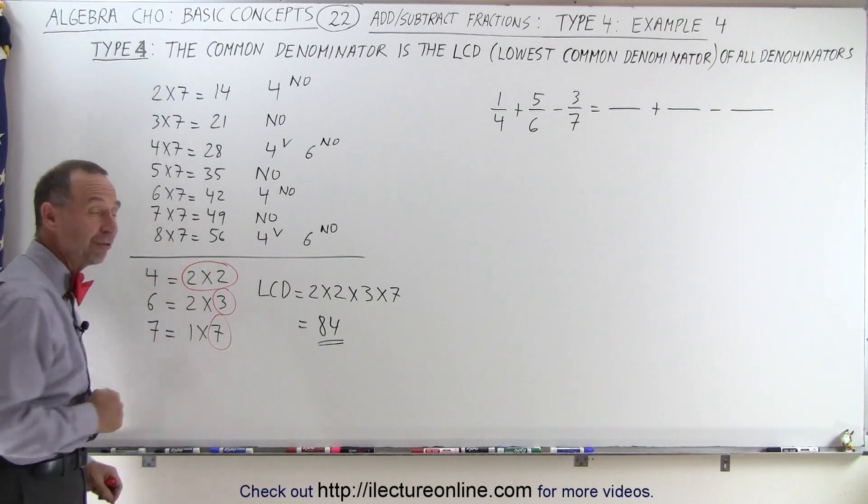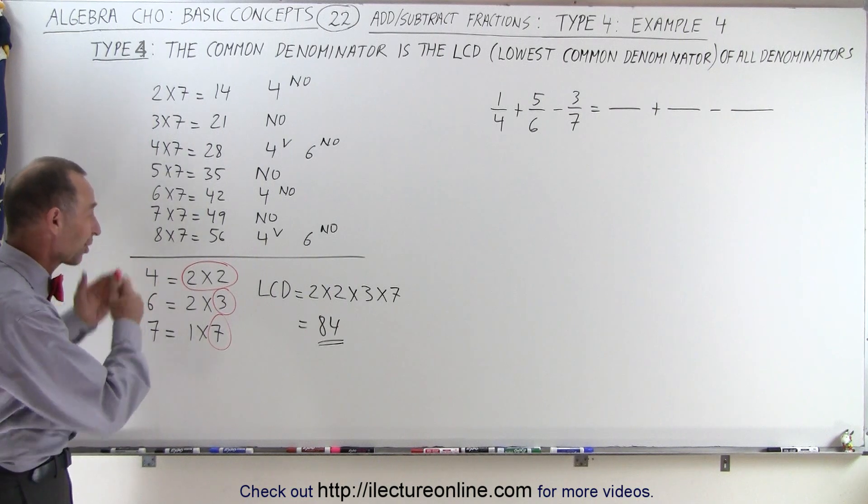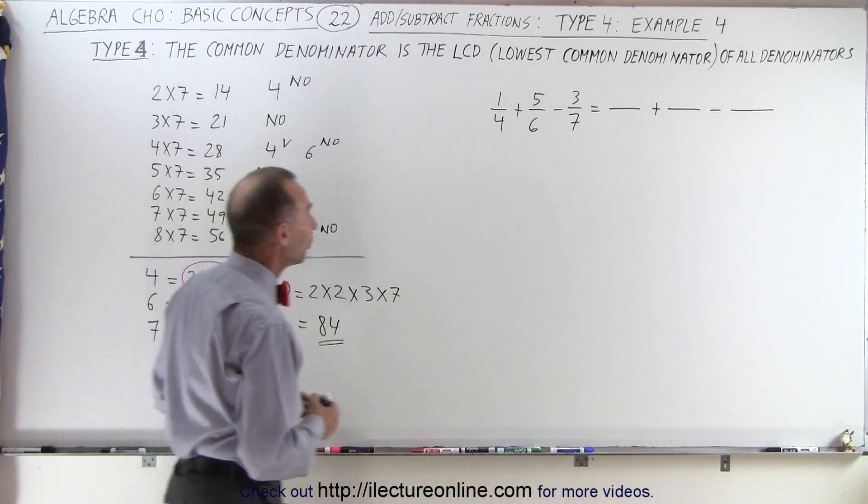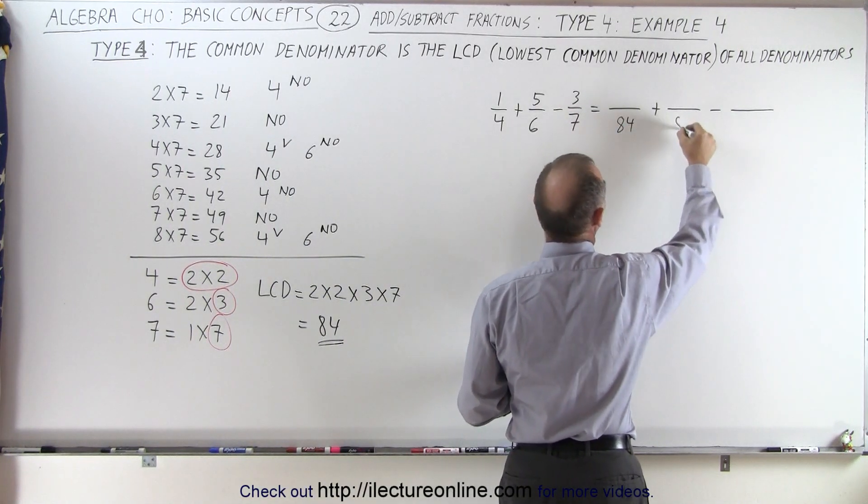Again, this is a fail-safe method, works every time. In this case, it was a lot easier. So now we go over here, we realize our denominators are going to be 84. That's the common denominator.